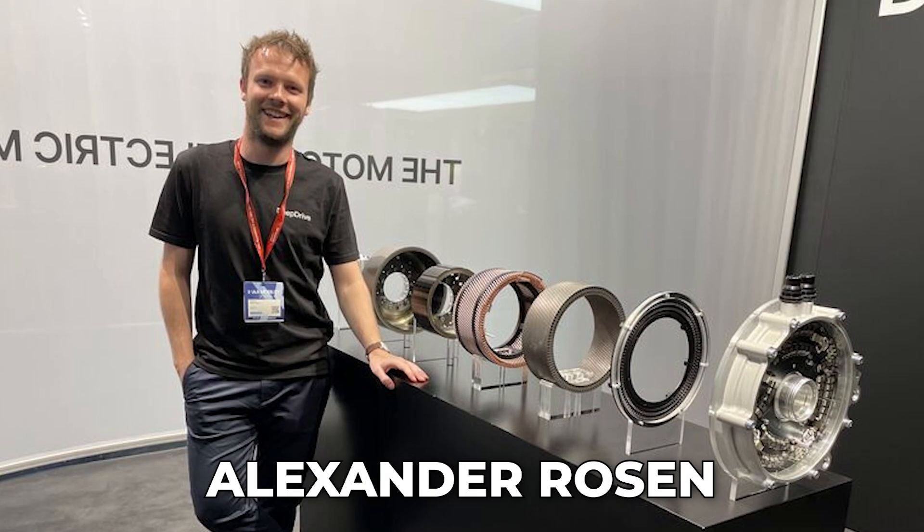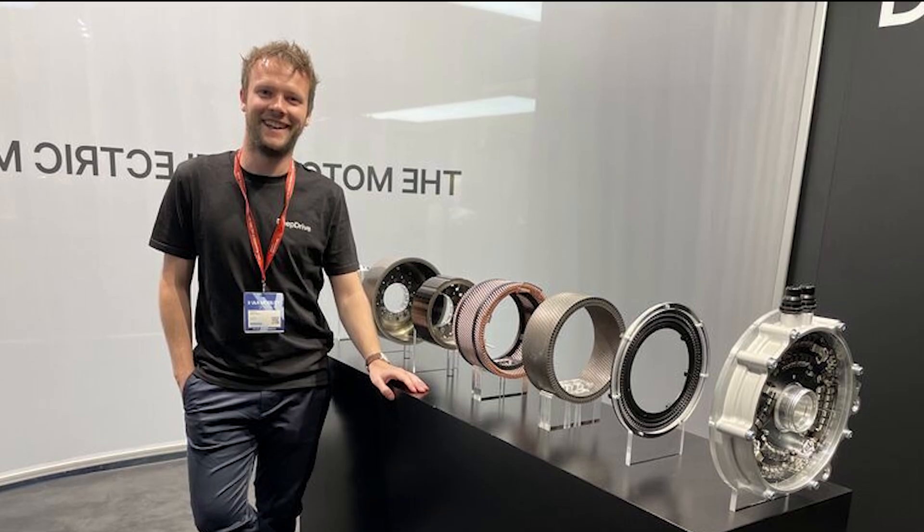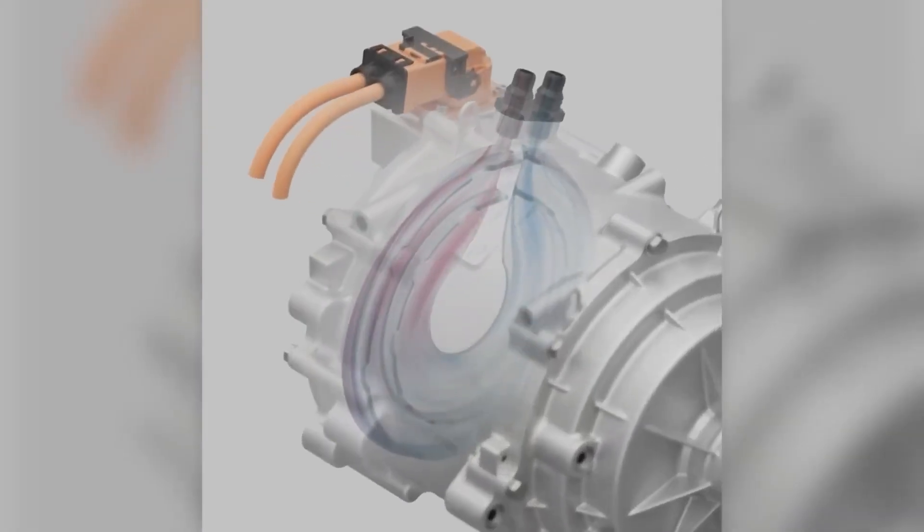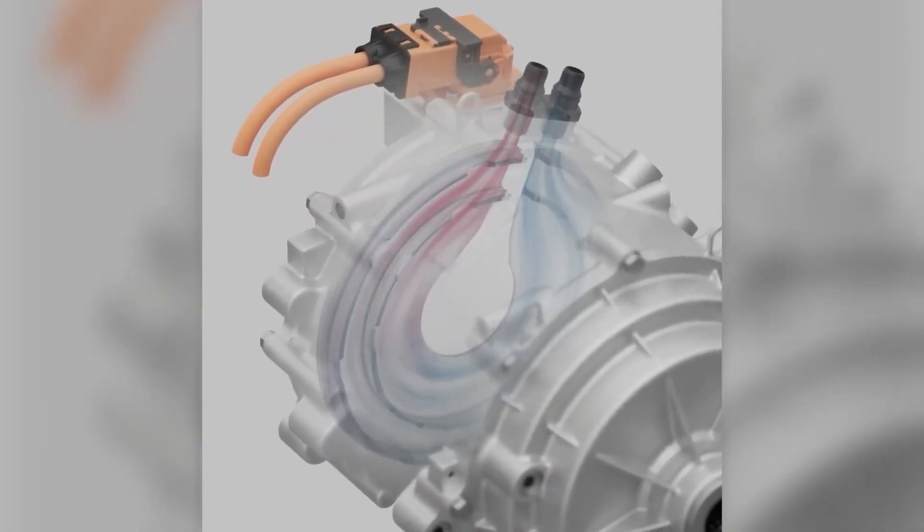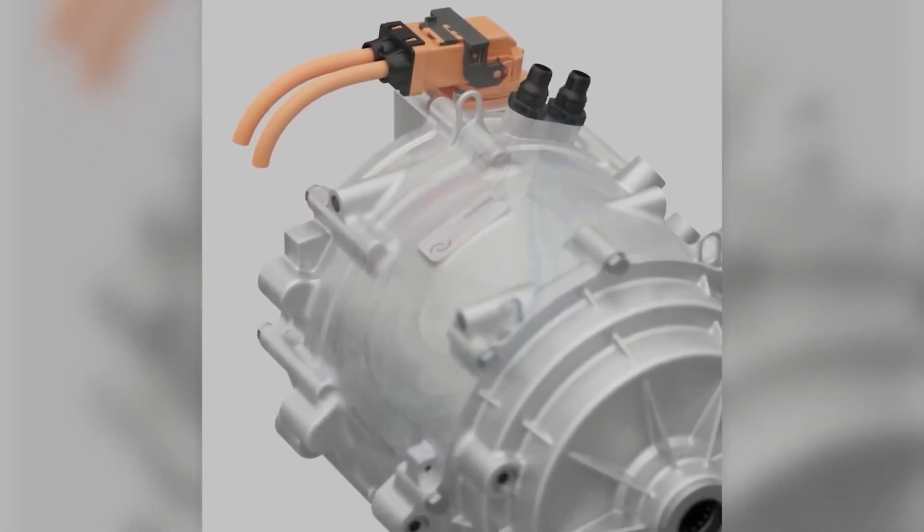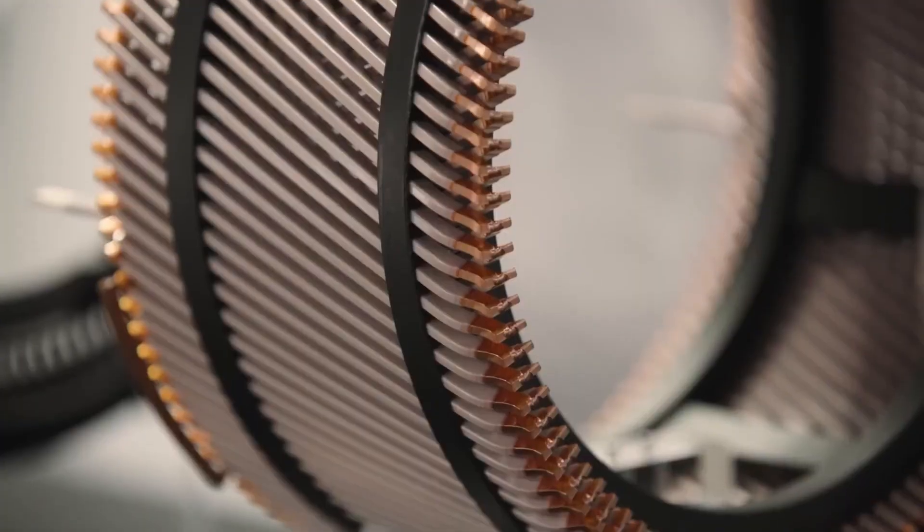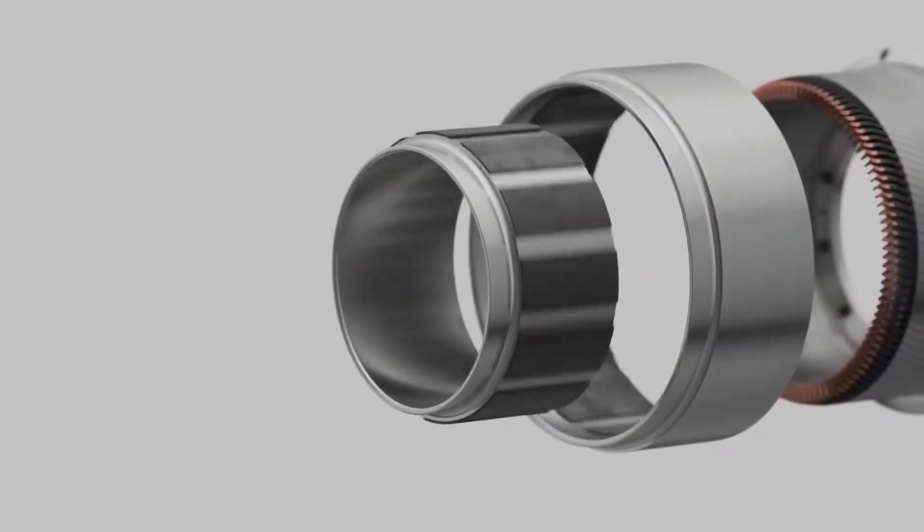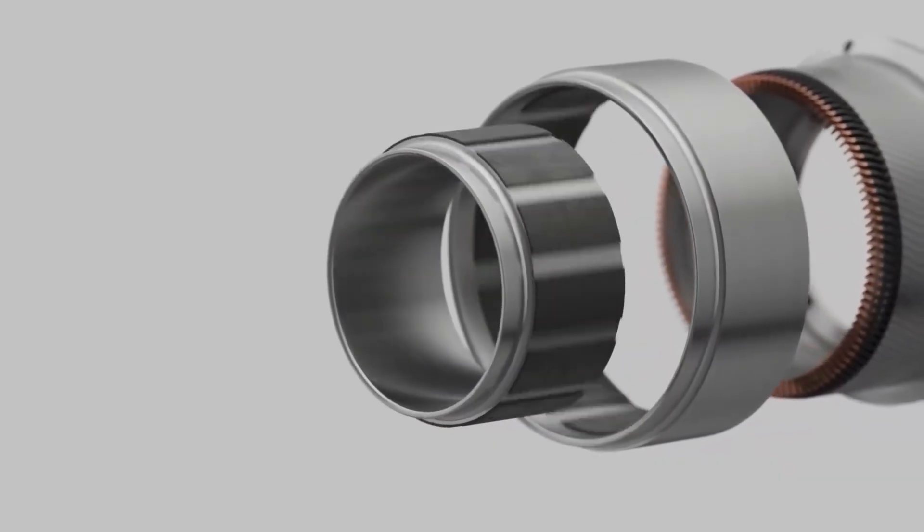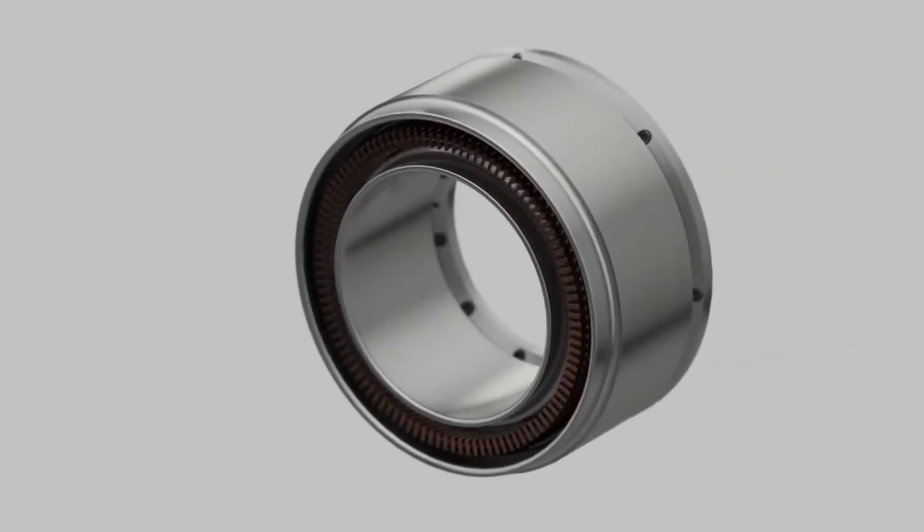When I spoke with Alexander Rosen, DeepDrive's chief engineer, he emphasized that these windings also serve as a direct thermal pathway. One end of each bar connects to the motor housing. Heat flows through the copper bars into the outer structure, which is cooled by fluid. This allows the winding structure to act as a heat bridge that replaces the yoke's cooling role.